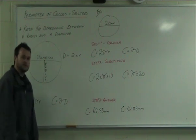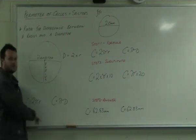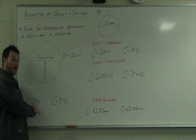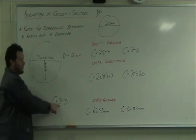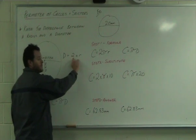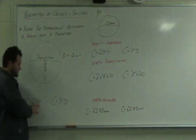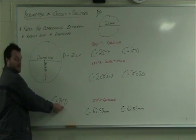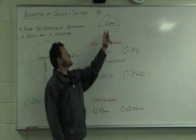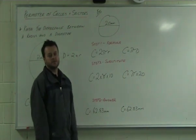Let's look at the formulas. The circumference of a circle — you've got two options. The circumference equals 2 times pi times the radius, or pi times D. The '2 times radius' is the only difference — it's the same as D. These two formulas do the exact same thing; it just depends on whether you're given the radius or the diameter.